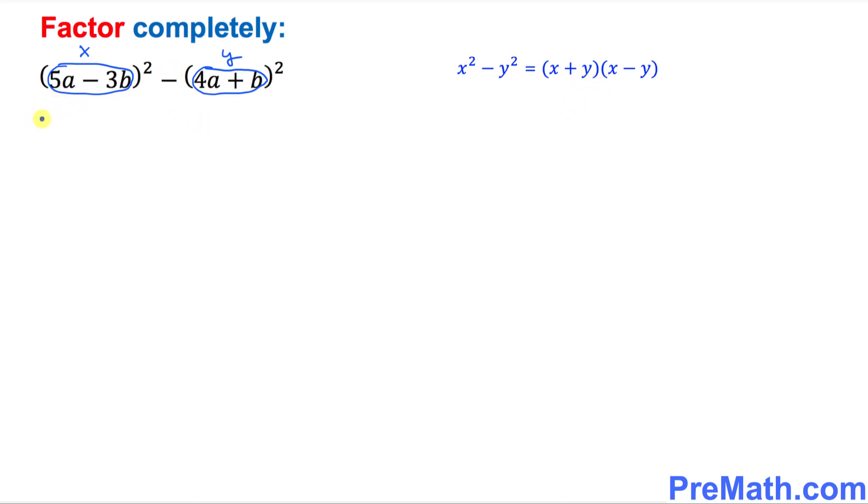So now let's go ahead and put it down. I'm going to put down (5a minus 3b) plus (4a plus b) times (5a minus 3b) minus (4a plus b). So once again, let me make it clear: this part is your x and this is y, this is your x and this is your y.